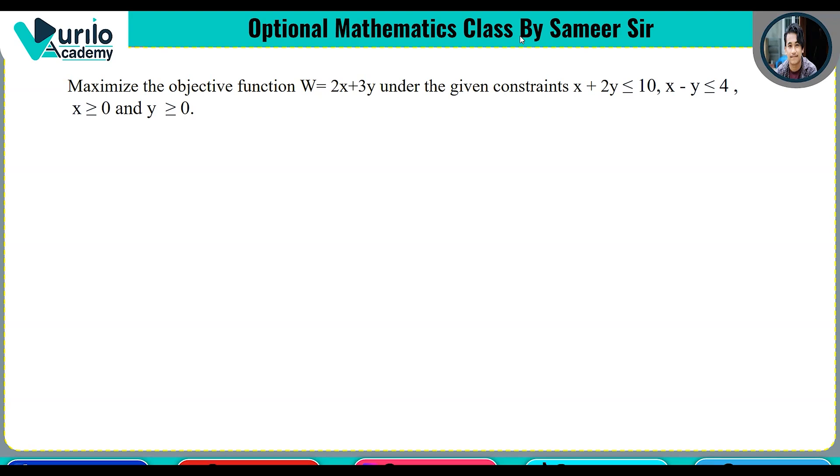The question asks us to maximize the objective function W equals 2x plus 3y under the following constraints: x plus 2y is less than or equals to 10, and x minus y is less than or equals to 4, with x greater than or equal to 0 and y greater than or equal to 0.